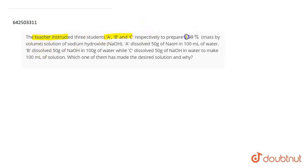The question is: The teacher instructed three students A, B, and C respectively to prepare a 50% mass by volume solution of sodium hydroxide NaOH. A dissolved 50g NaOH in 100ml of water, whereas B dissolved 50g NaOH in 100g of water. While C dissolved 50g of NaOH in water to make 100ml of solution. Which one of them has made the desired solution and why?